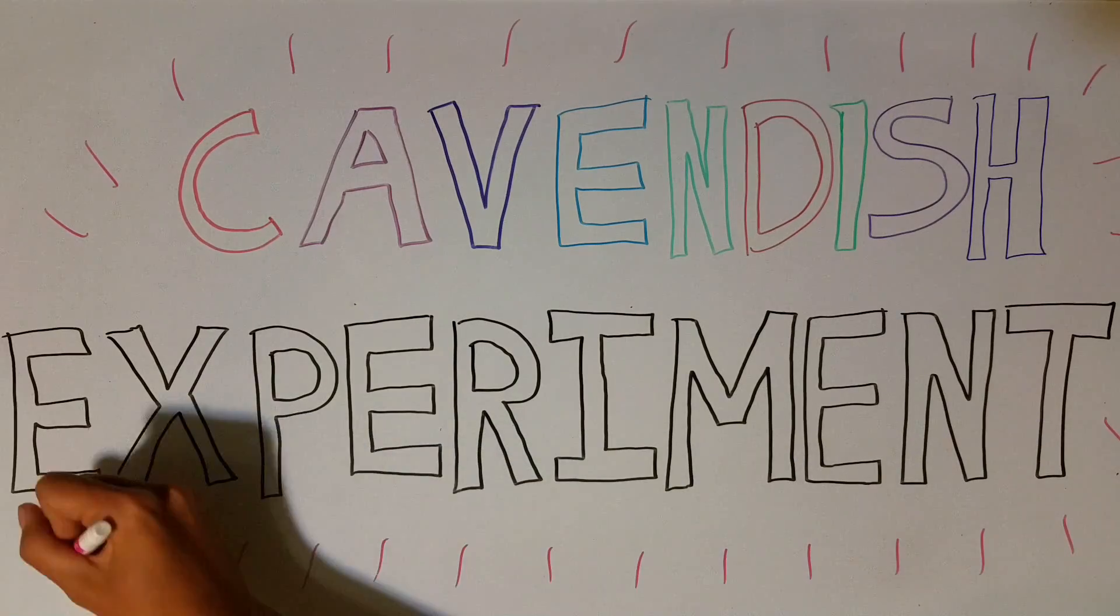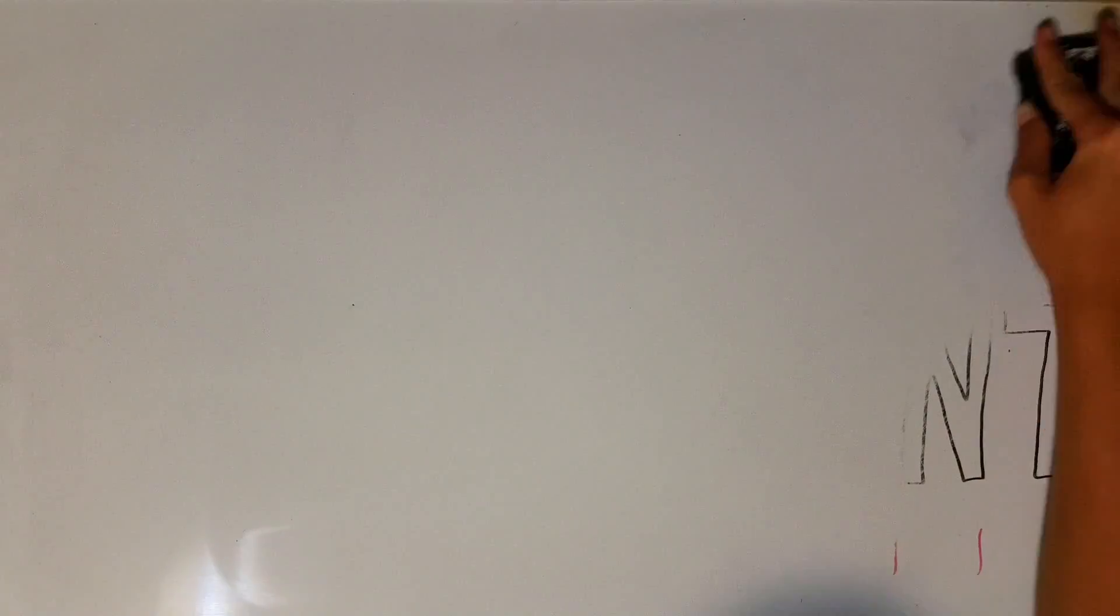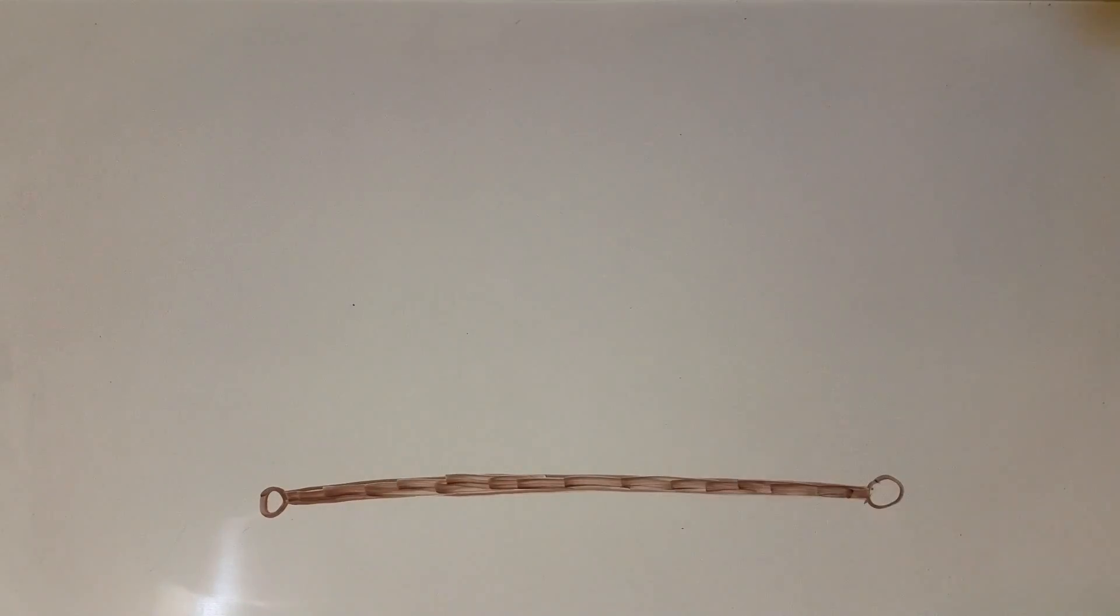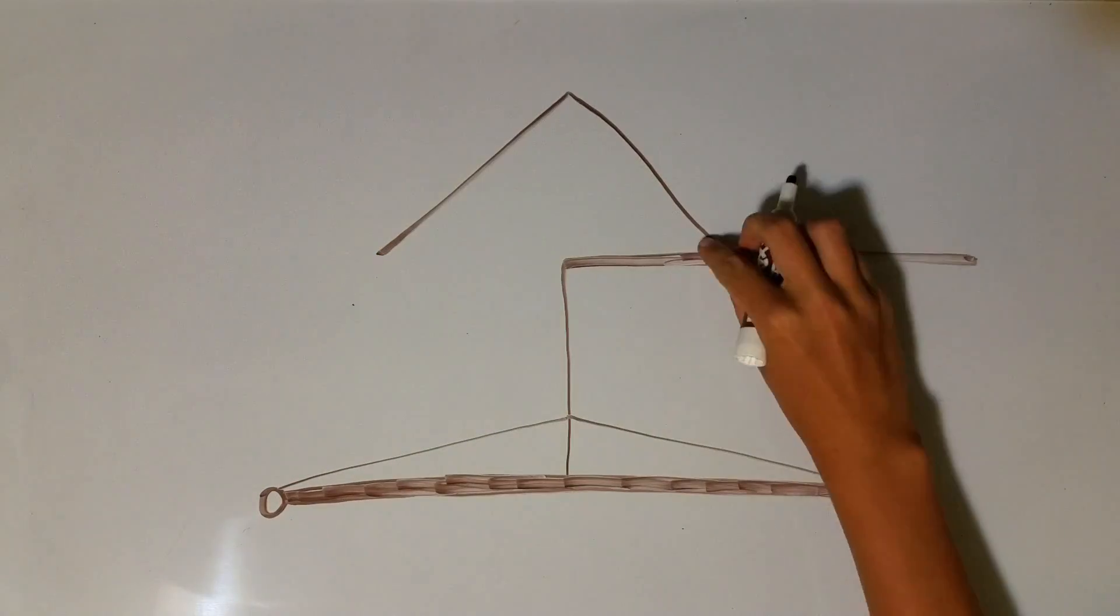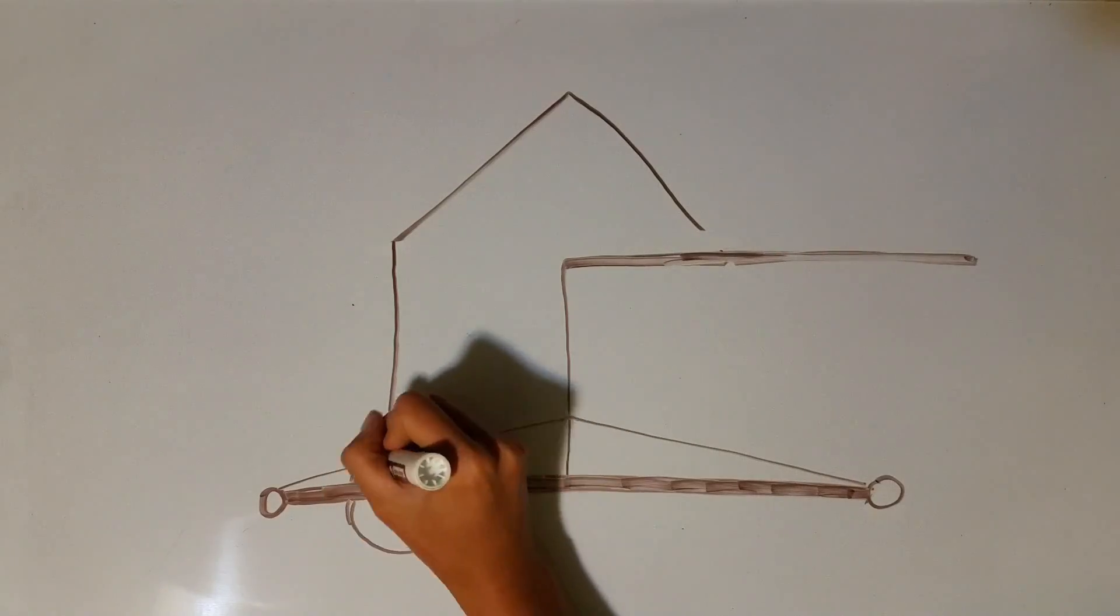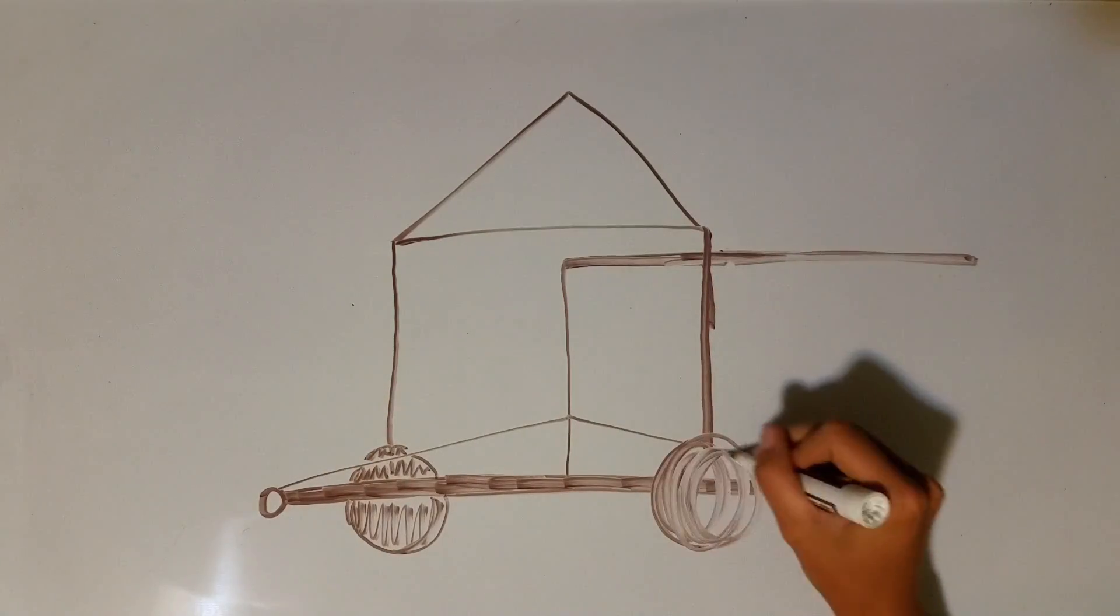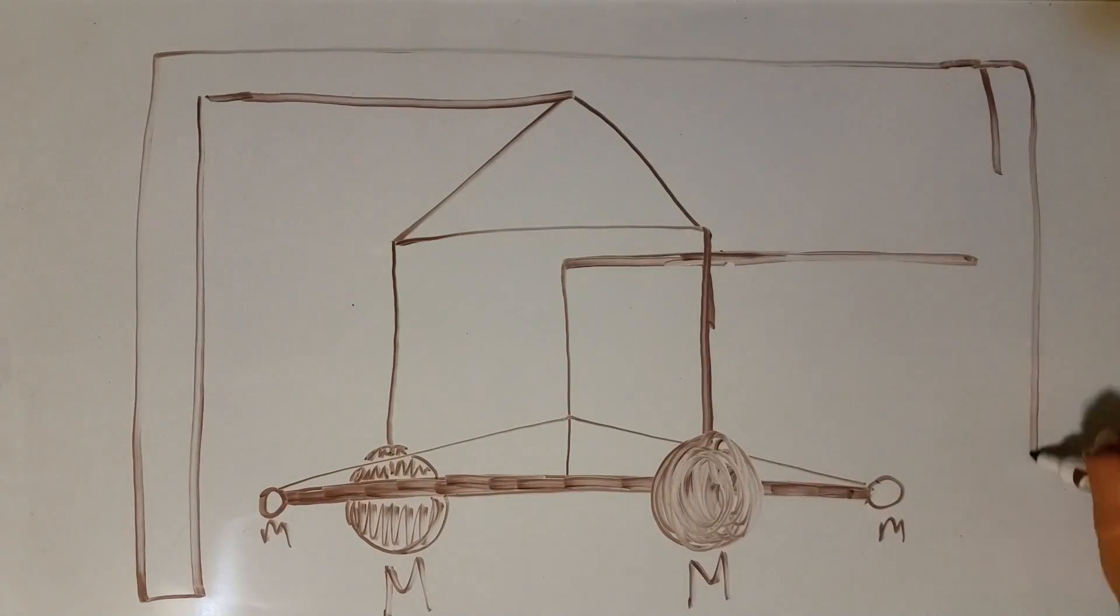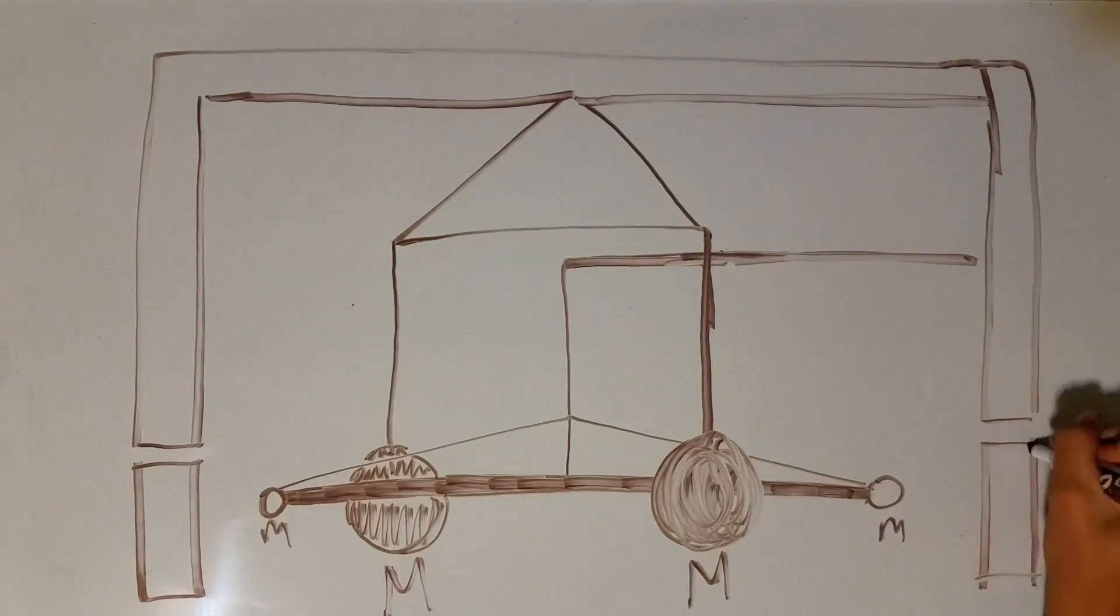Here is how it worked. Cavendish had two 1.6 pound lead balls attached to either end of a wooden rod suspended from a wire. He also had two 348 pound balls fixed equal distances from the wire. He even covered his experiment in a thick wooden box with two holes for observation to prevent interference from air currents.